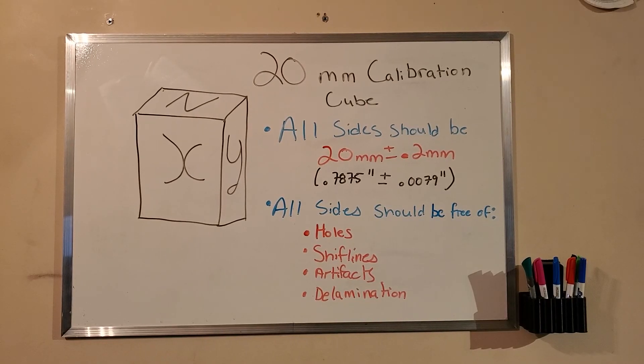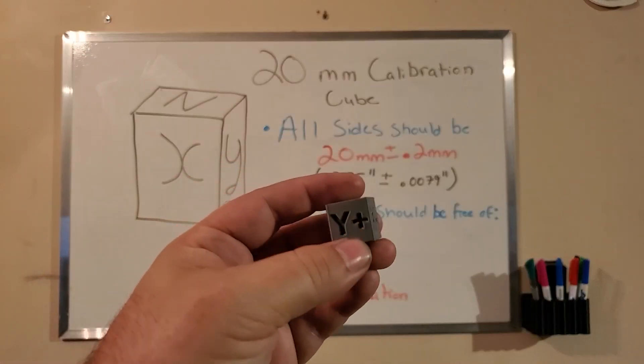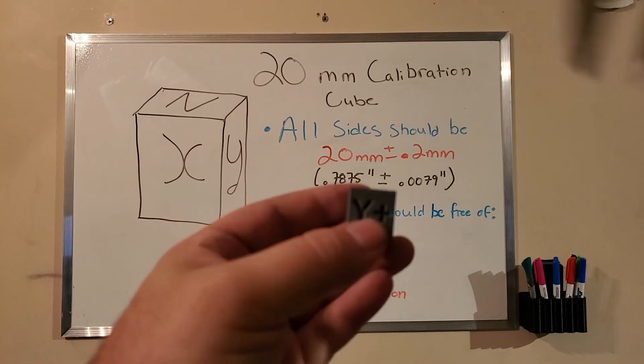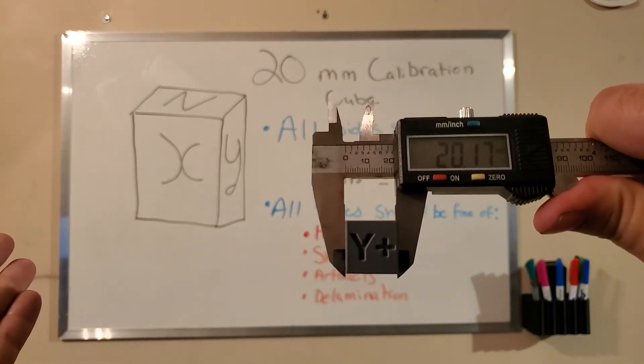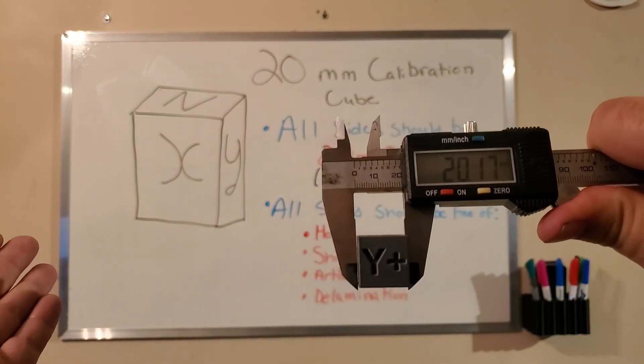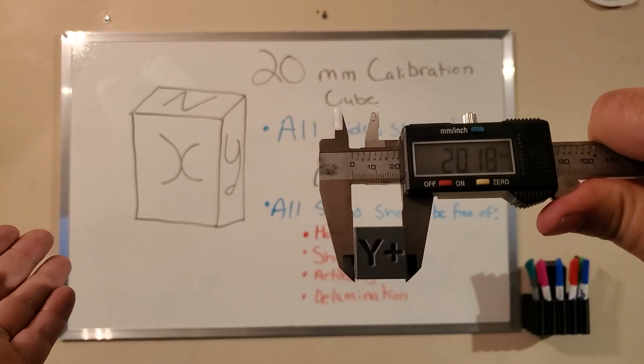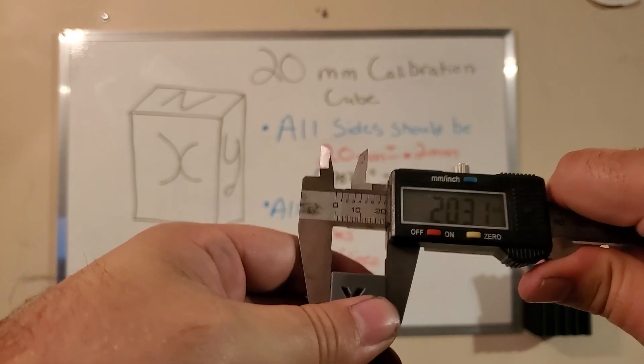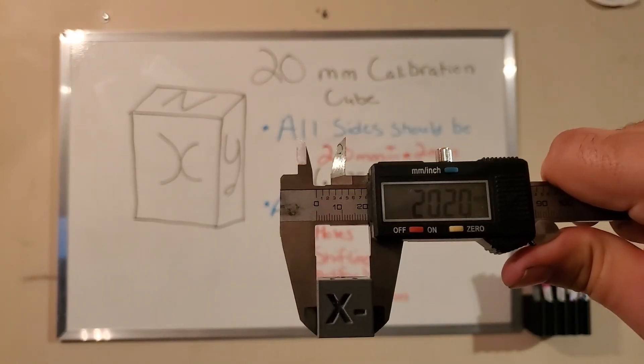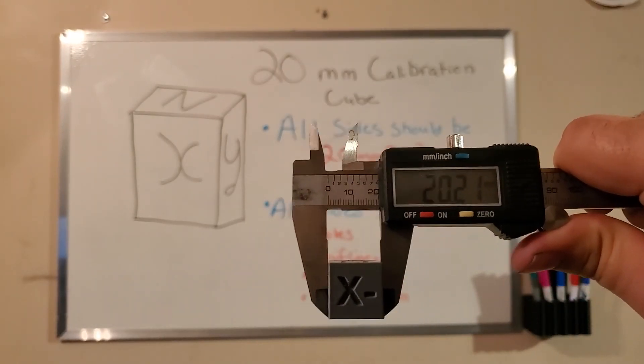Now that we have that well calibrated, we can bring out our fancy calibration cube. And we're going to go around here, take some quick measurements. So on our X side, we have 20.18. So that's well within our tolerance. Check our Y side, get a good reading here. So 20.2. Yeah, that's all right. I probably wouldn't change that. That's close enough to tolerance.